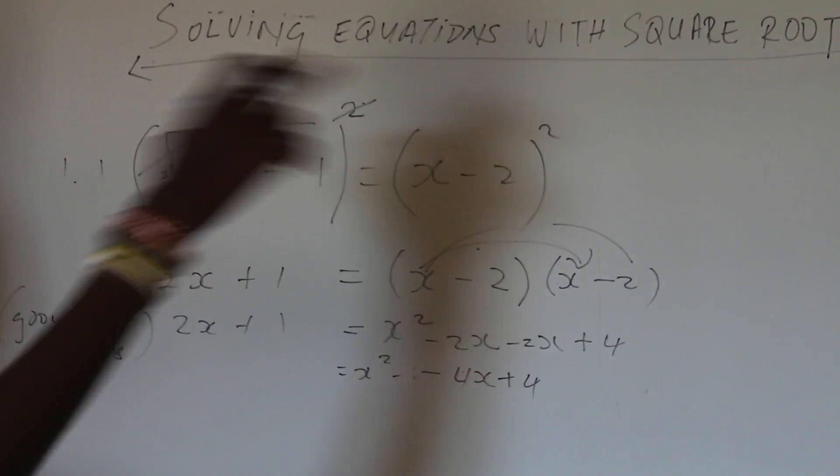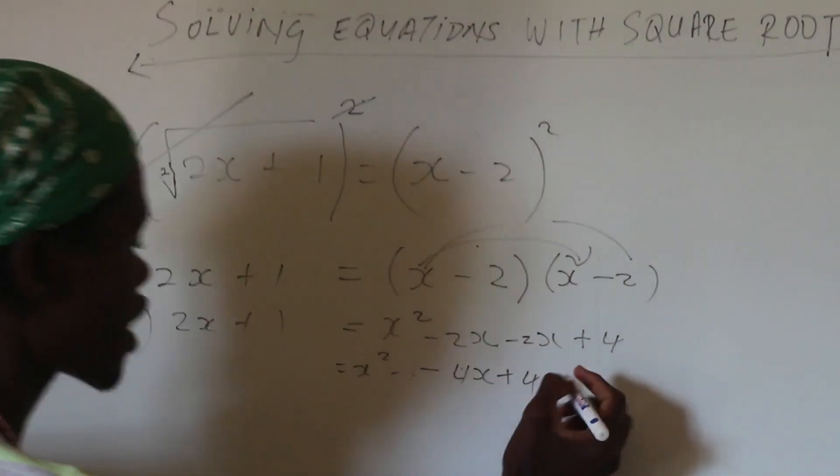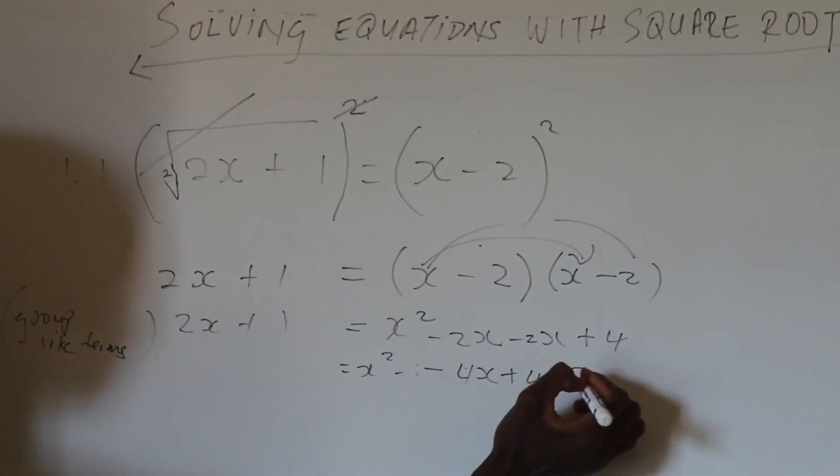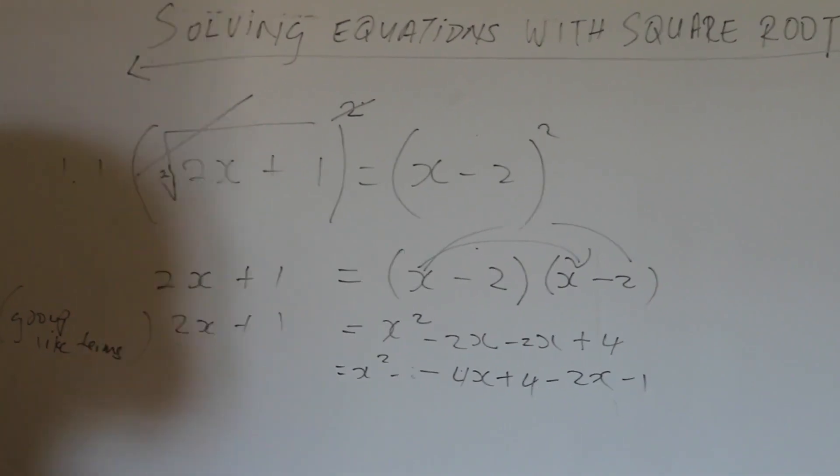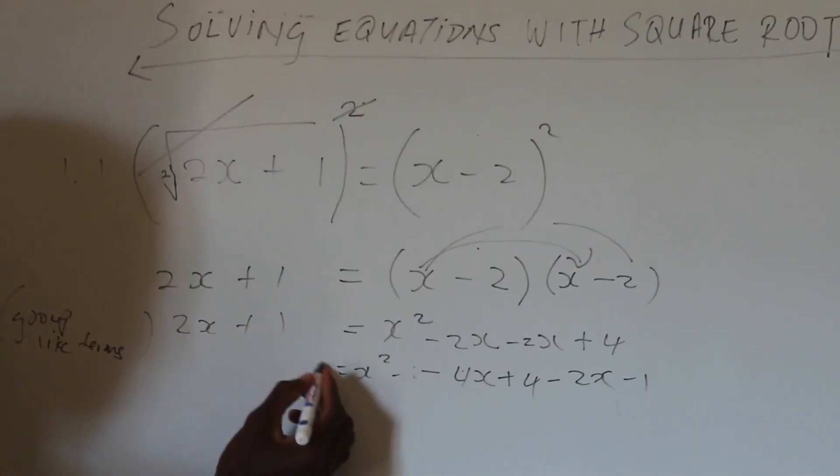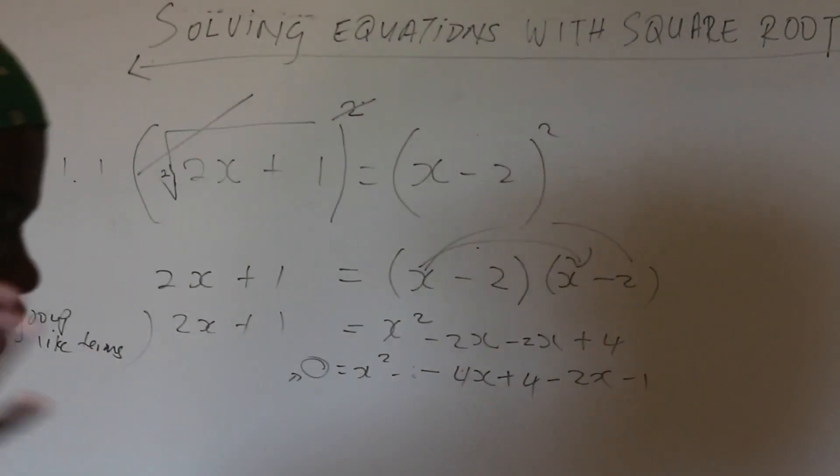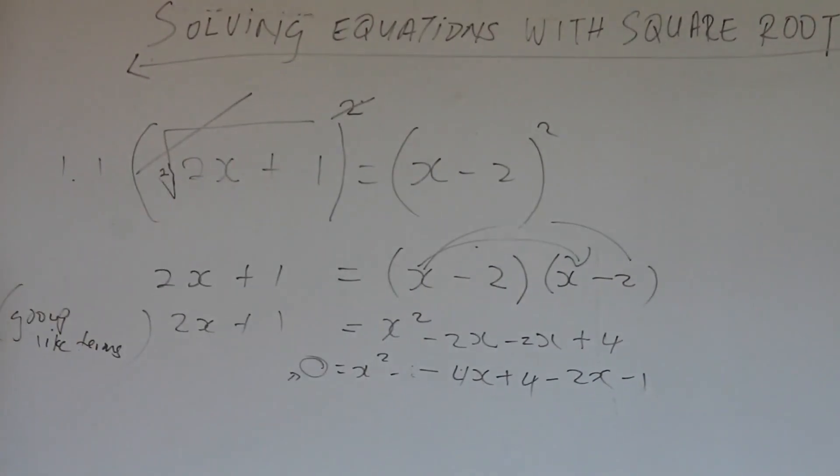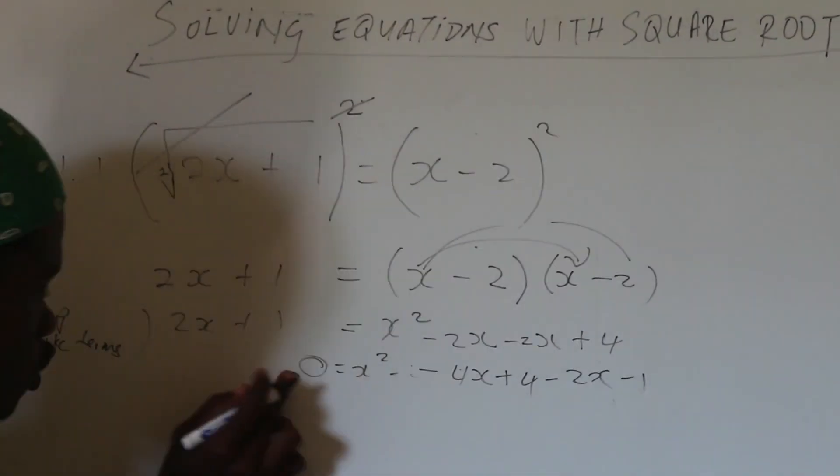How do we take this one to the other side? Every time we transpose the sign changes. So I'm going to transpose the 2x and it's going to become negative 2x. And I transpose the 1 to become a negative 1. Then what do I do? I equate it to 0.